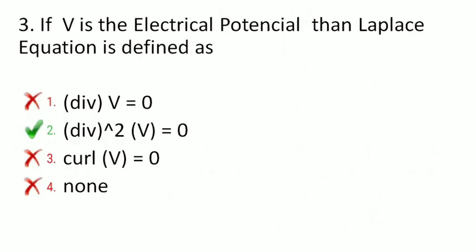Next is: if V is the electrical potential, then the Laplace equation is defined as — divergence of V equals zero, divergence squared of V equals zero, curl of V equals zero, or none? The correct option is the second option: divergence squared of V equals zero.